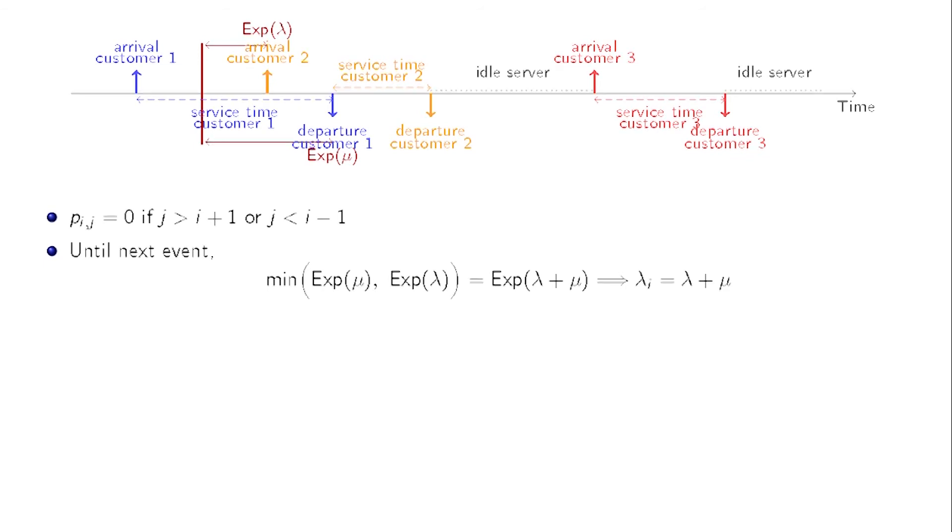If we have i clients present in the system, the next event happens either when there is an arrival or when there is a departure. The next arrival happens in an exponential time of parameter lambda since the arrivals form a Poisson process of intensity lambda.